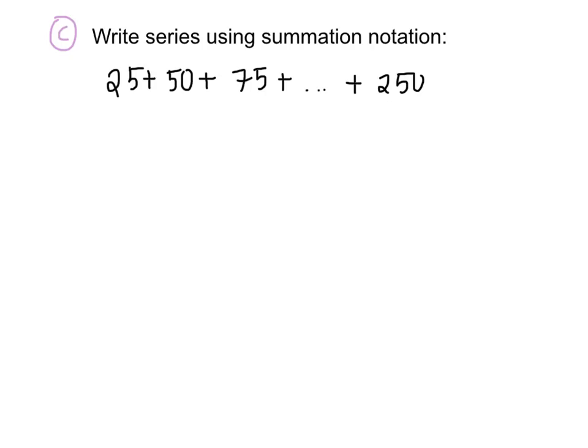Our next problem tells us to write a series using summation notation. Based on this series, we know that our upper limit is going to be 10. Our index is going to be 1, and we have 25 times i because we can tell that this is 25 times 1 times 2 times 3 etc., all the way till 10.